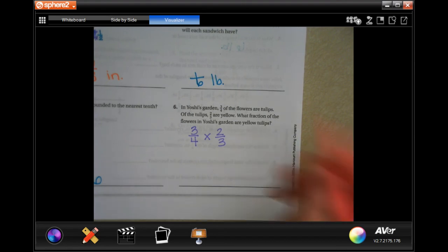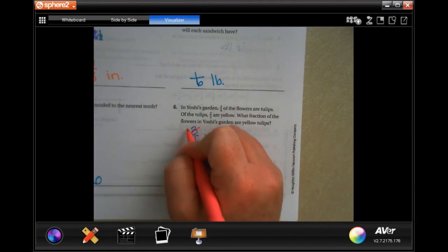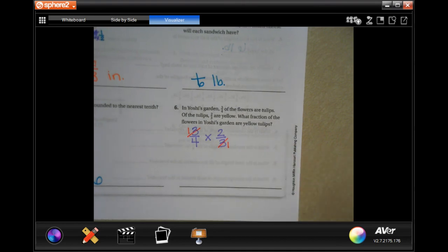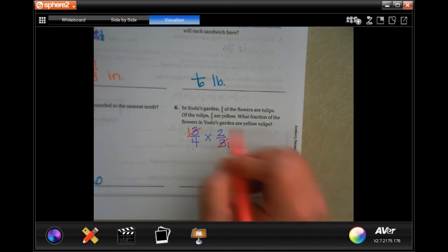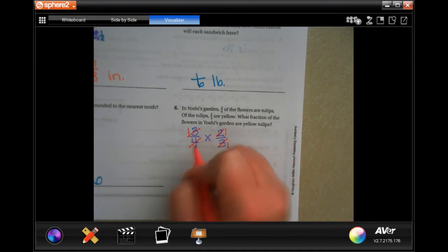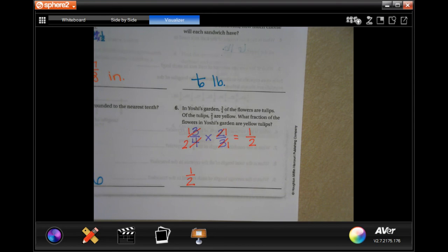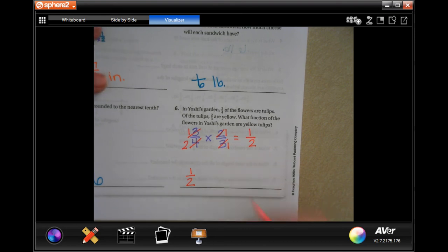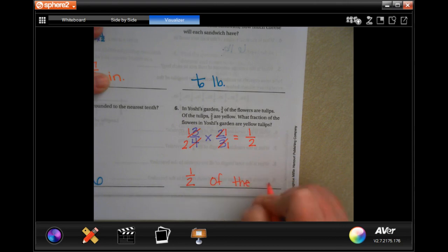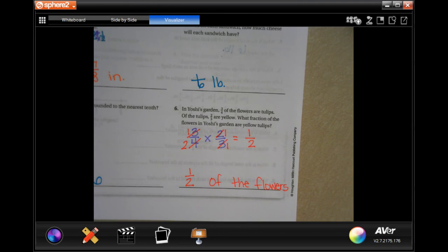Let's cross cancel. I see two numbers, the top and the bottom, that are identical. So those get to become ones. Two goes into two once and two goes into four twice. Now when I multiply straight across, one times one is one and two times one is two. So half of the flowers. Word problem, word answer, guys.